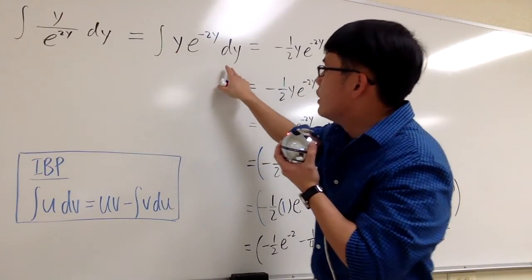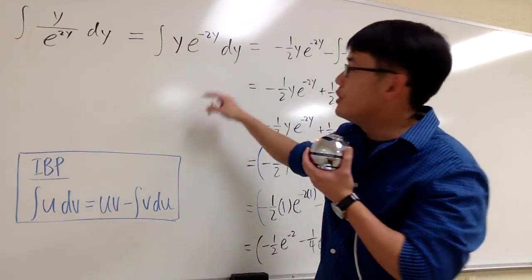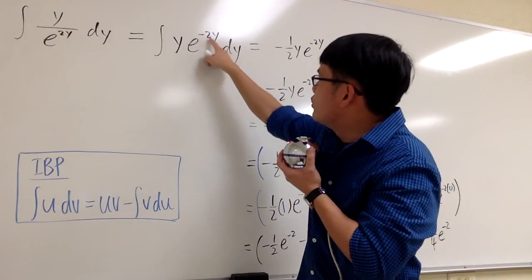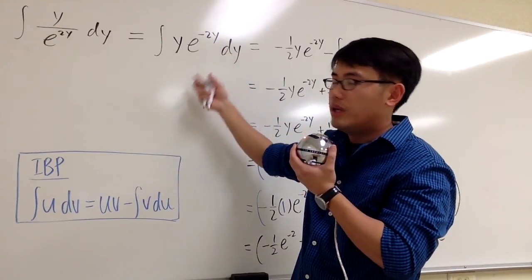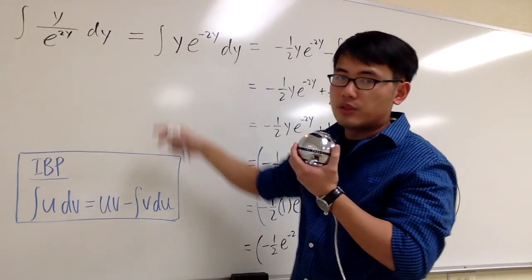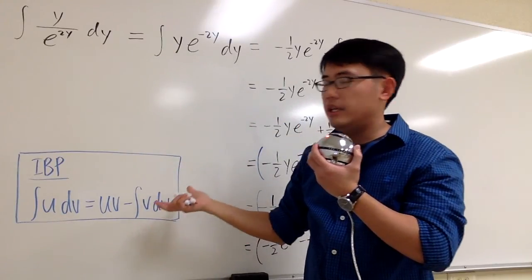This way, we can try to use a u substitution, but it won't work, because the derivative of negative 2y is just negative 2. I cannot cancel out this y. So we can try to use integration by parts.